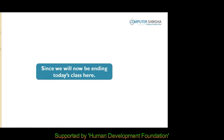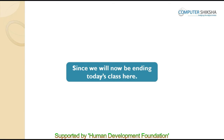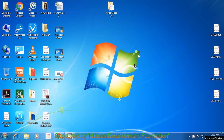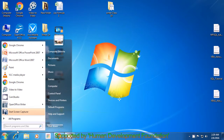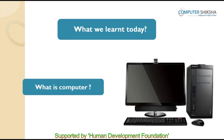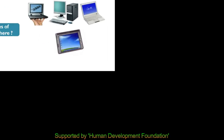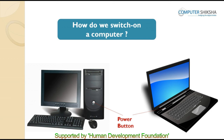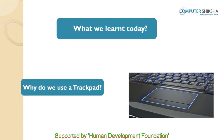Since we are ending today's class here, you should learn how to shut down the computer. Bring your pointer to the Start button, then use your mouse or touchpad to click the left button. A box appears — look for the shutdown option and take your pointer there, then click with the left button and your computer will shut down. In today's class, you have learnt what is a computer, how many types of computers there are, what all you can do with a computer, how to turn on a computer, why we use a mouse and a touchpad, and how to shut down the computer.